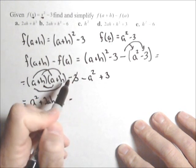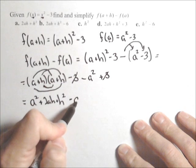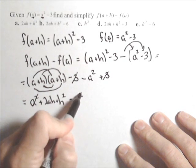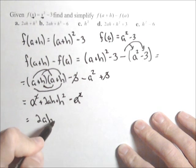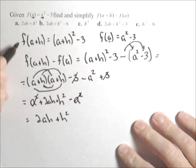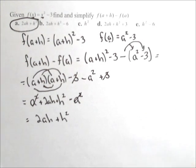Let's cancel these out. -3 and +3 cancel, and the a² terms cancel. We get 2ah + h² for our final answer, completely simplified.